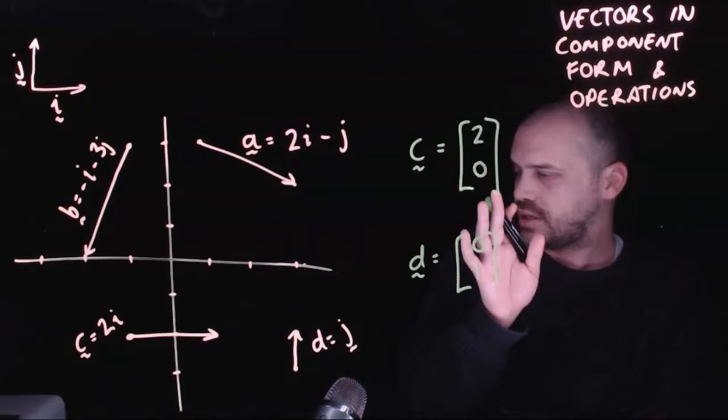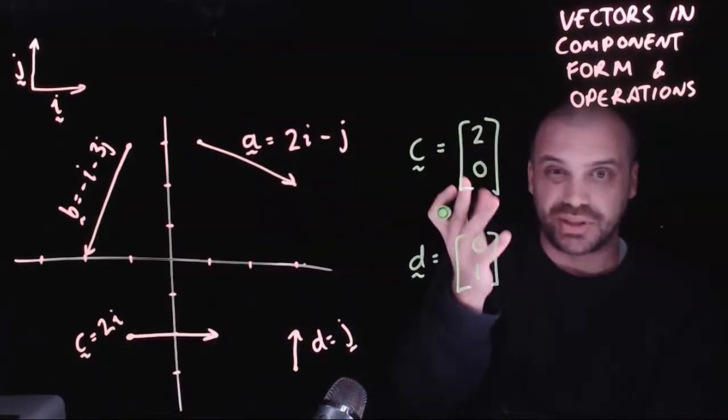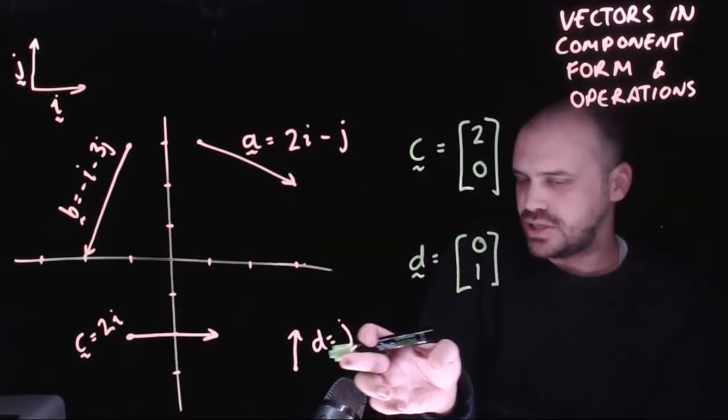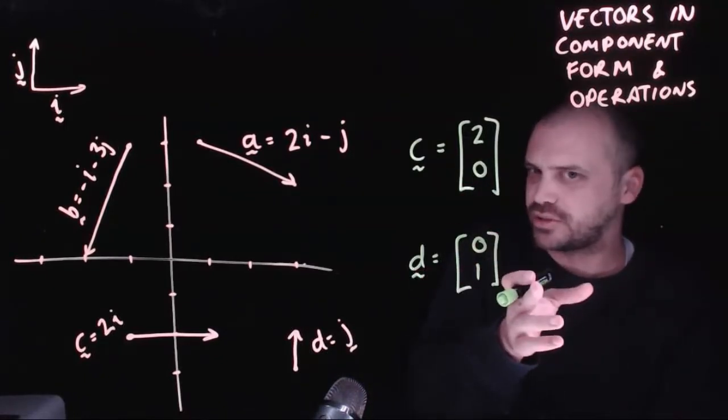Just in case you are wondering, this is how you express c, two and zero in the j direction. And d is going to be zero in the i direction and one in the j direction.